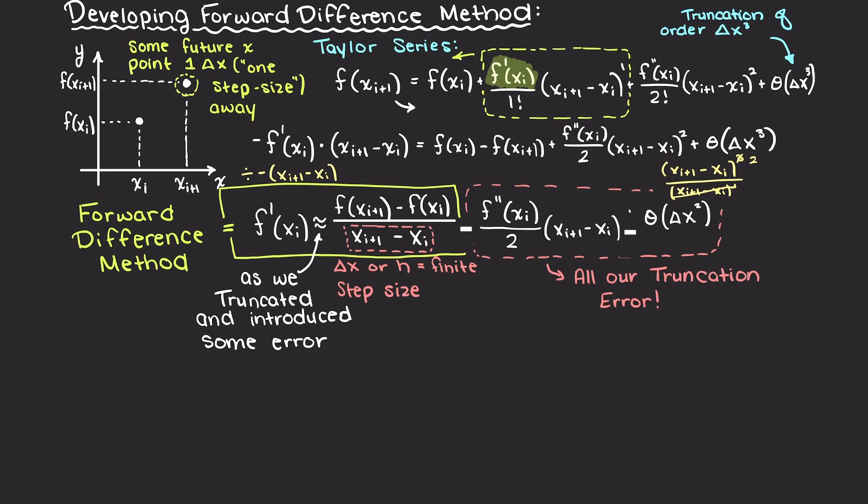And this is our first finite difference method that we are going to be learning about. This is the forward difference method, as we are looking forward at a point, xi plus 1, and we are using a finite difference as we are taking the difference between two function values at discrete points a finite distance away.